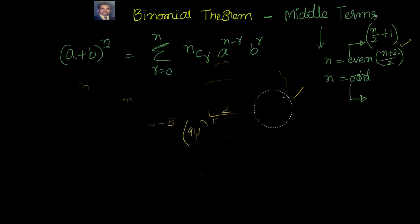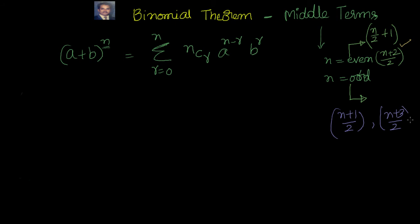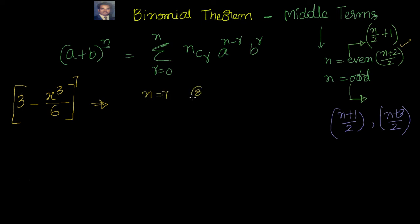Now let's do another example where n is odd. The example is (3 − x³/6)^7. Here n = 7, which means there are 8 terms. So there will be two middle terms. Using the formula: (7+1)/2 = 4 and (7+3)/2 = 5. So we need to find the 4th and 5th terms.